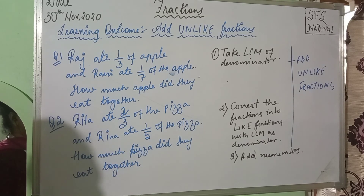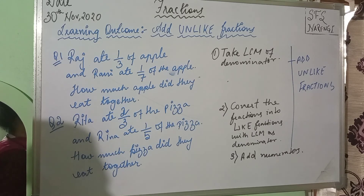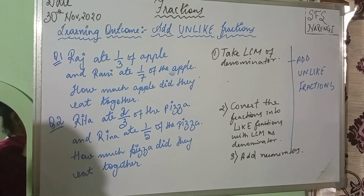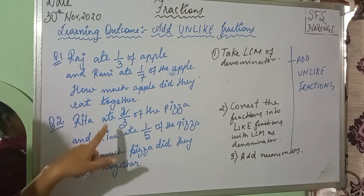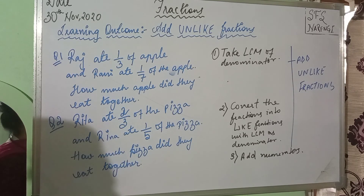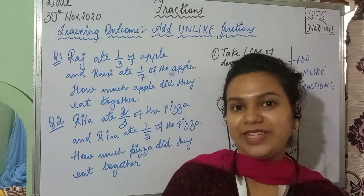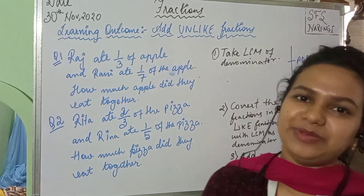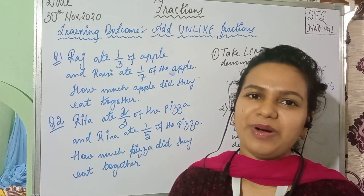Raj ate one third of the apple, Ravi ate one seventh of the apple — you have to find how much they ate together, so you add the unlike fractions. In the second question, Rita ate two thirds of the pizza and Rina ate one fifth of the pizza — you have to find how much they ate together, so again you add them up. I hope today's class was clear to you, but still if you have any problems, please get back to me. I'll see you tomorrow. Thank you!